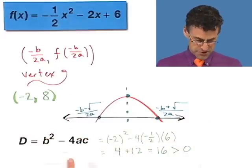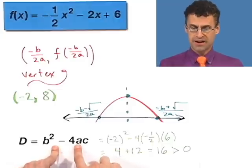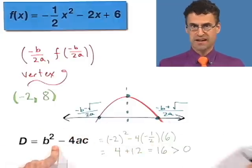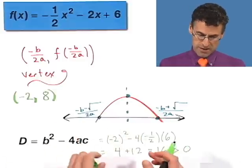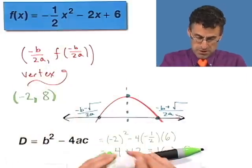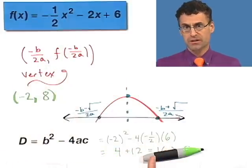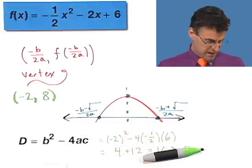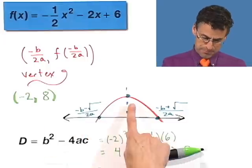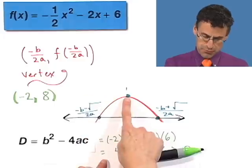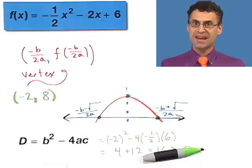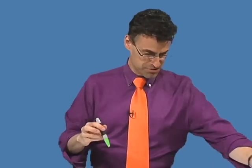If the discriminant were negative, we'd have imaginary roots, meaning the parabola would never cross the x-axis and would live totally above or totally below it. If the discriminant equals 0, there's only one root with multiplicity two, meaning the x-axis touches right at the turning point — the parabola just grazes it at one point. Here we see there'll be two solutions.